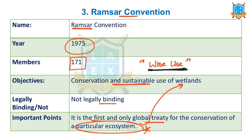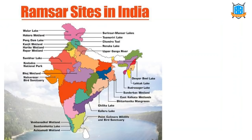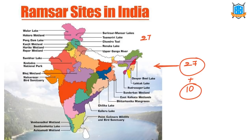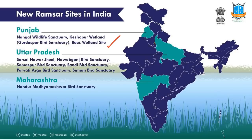Remember — this is the first and only global treaty for the conservation of a specific ecosystem: the wetland ecosystem. The CMS Convention covers terrestrial, aerial and marine migratory species; Ramsar protects one specific ecosystem. Earlier we had 27 Ramsar sites in India; last year we added 10 more. Please remember this list of newly declared Ramsar wetlands — this can be a prelims question.